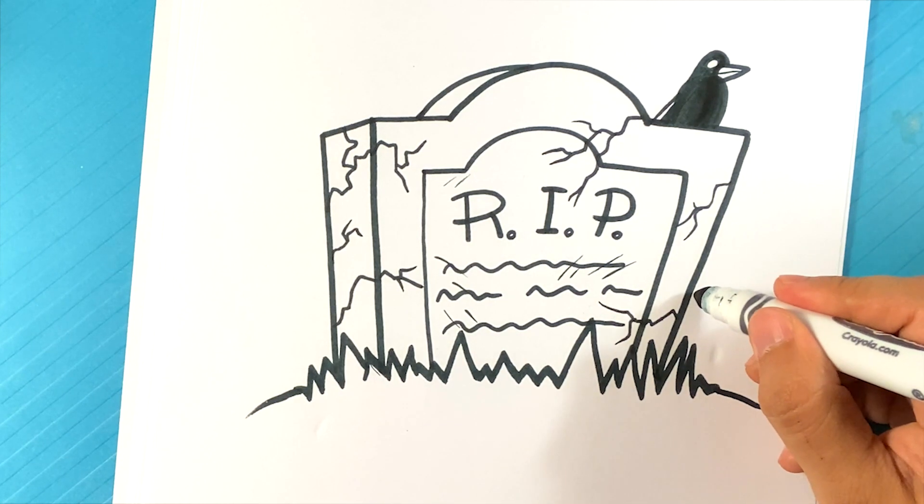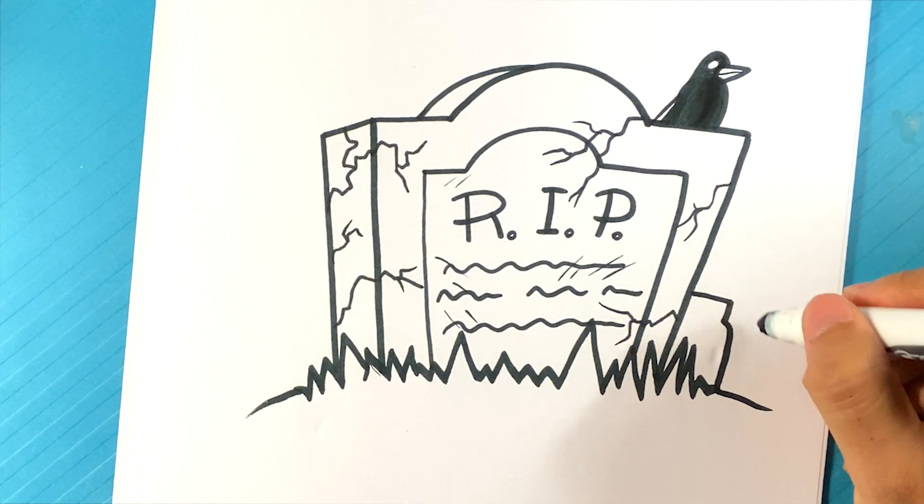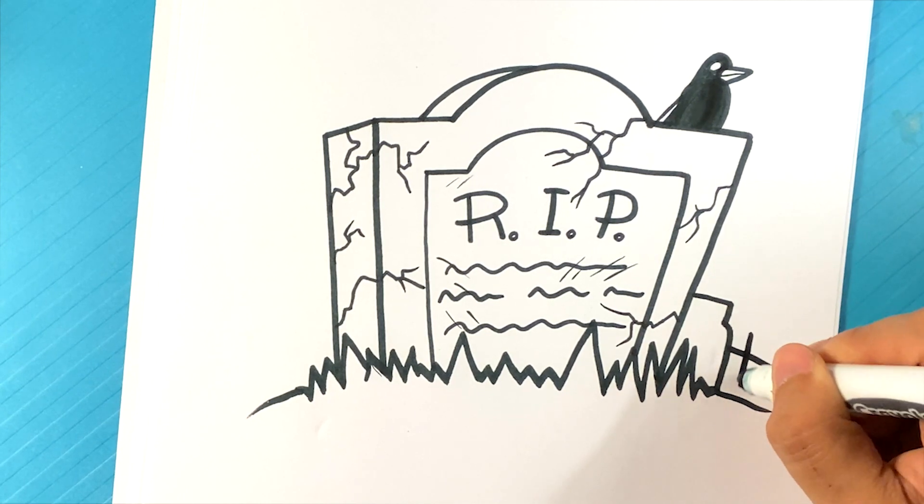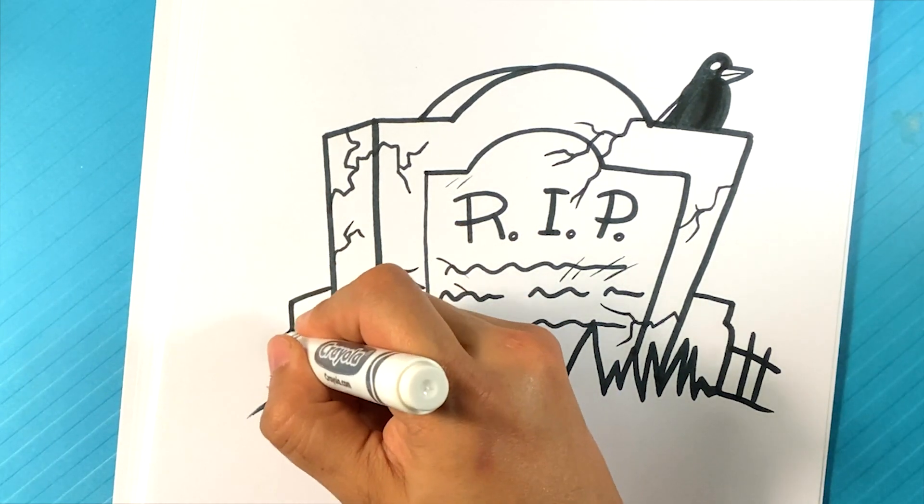And you can always draw maybe another gravestone around the side in the background. You can do what I like to do which is you draw a fence over here and maybe on the other side I'll draw a gravestone over here.